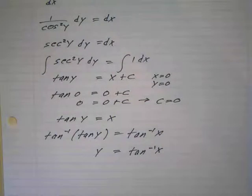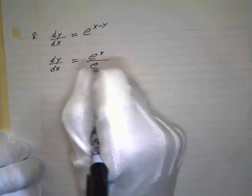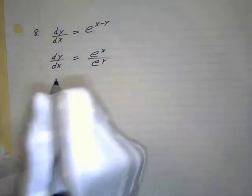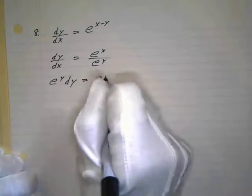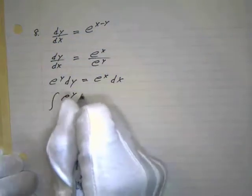That's number six. Number eight is dy/dx equals e to the x minus y. We have to separate that out — it's the same thing as e to the x divided by e to the y. So we can separate the variables and get e to the y dy equals e to the x dx.